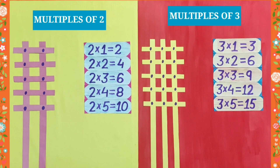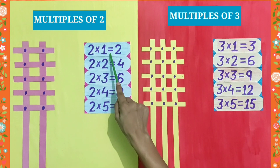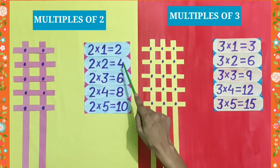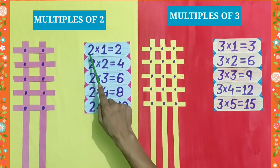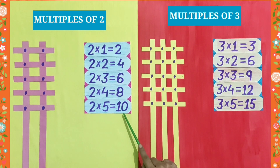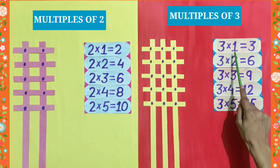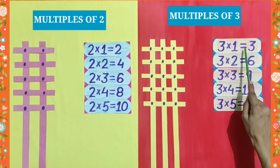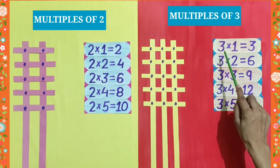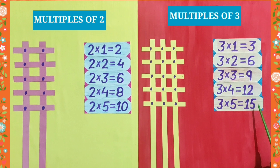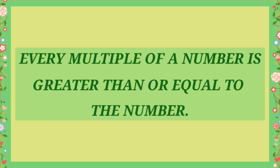Dear students, we have seen that the first multiple of 2 is 2, which is equal to the number 2. And its other multiples — 4, 6, 8, 10 — are greater than 2. It means that the multiple of 2 is either equal to 2 or greater than 2. Similarly, the first multiple of 3 is 3, and its other multiples — 6, 9, 12, 15 — are greater than 3. It means that the multiple of 3 is either equal to 3 or greater than 3. So, from here, we get to know that every multiple of a number is greater than or equal to the number.